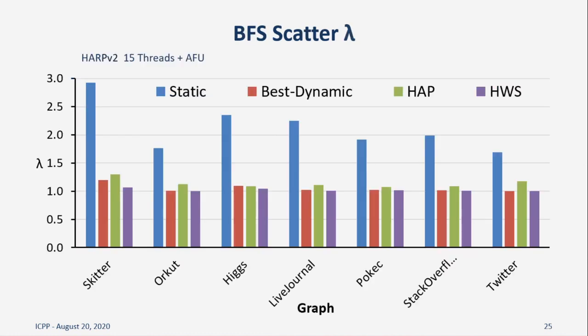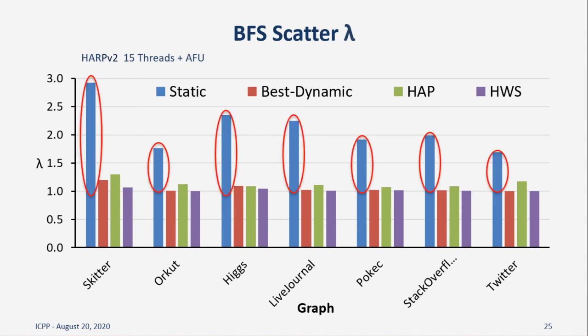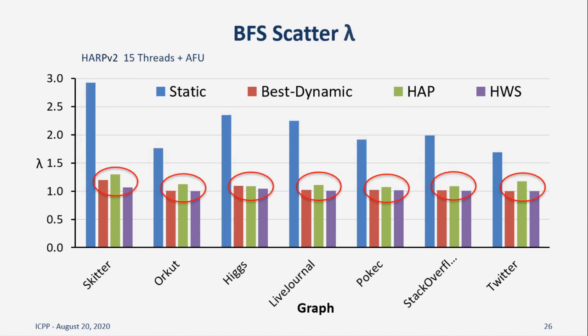Our first result highlights the load balancing capabilities of each of the schedulers for the BFS scatter phase when using 15 threads with the FPGA. We show the resulting lambda values produced by each. The first observation is that the lambda value produced by the static scheduler is indicative of high load imbalance, showing the necessity of a dynamic strategy. The second observation is that all three dynamic schedulers provide much better load balance, but HWS is able to achieve lambda values close to or equal to 1, outperforming static by up to 170%, HAP by up to 20%, and best dynamic by up to 12%. We achieve similar results for SSSP and PageRank, the results of which can be found in the paper.